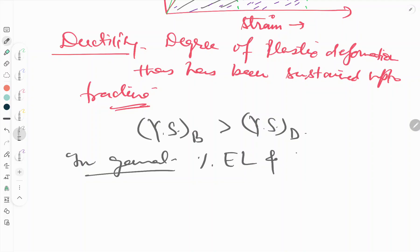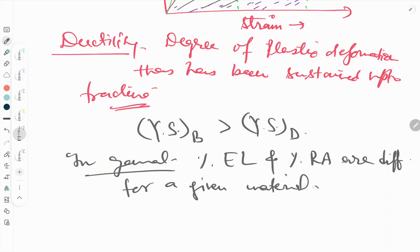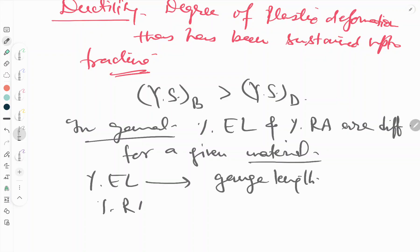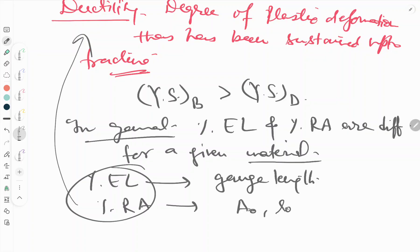Percentage elongation and percentage reduction in area are different for a given material. Percentage elongation depends especially on gauge length, while reduction in area is dependent on initial area and initial length. However, both these are factors related to the ductility of a material. Ductility is described by either percentage elongation or reduction in area.